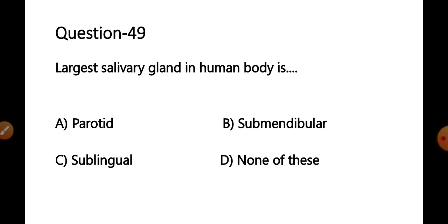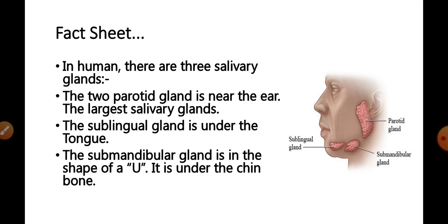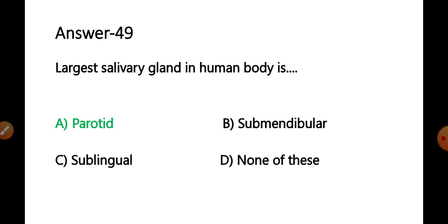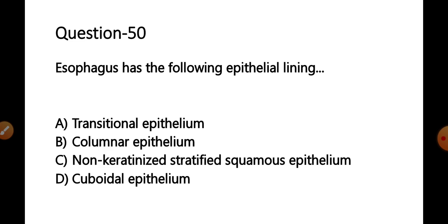Question 49: The largest salivary gland in the human body is — options: A) parotid, B) submandibular, C) sublingual, D) none of these. In humans there are three pairs of salivary glands. The parotid glands are located near the ear and are the largest. The sublingual gland is under the tongue, and the submandibular gland is U-shaped, located under the chin. The correct answer is option A — parotid.